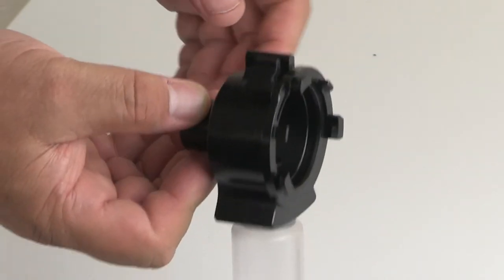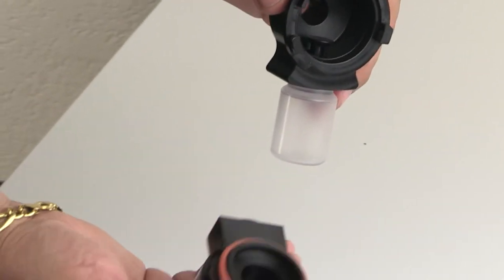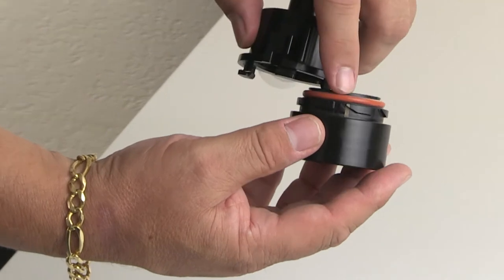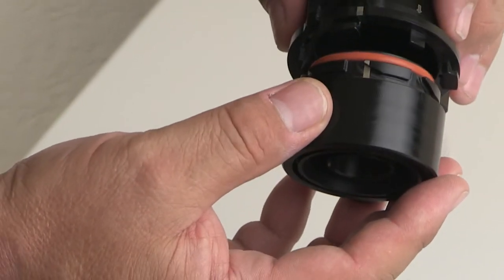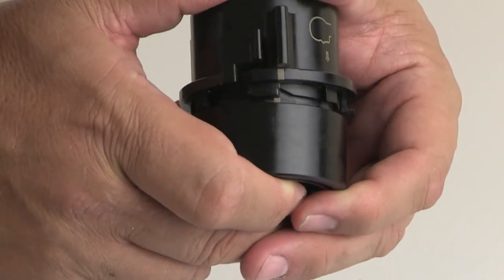The second step is I'll take the patient side of the valve, the other side, and again you'll see the two lines. There's one line, there's the other line. I will position them together and just give the valve a good press.